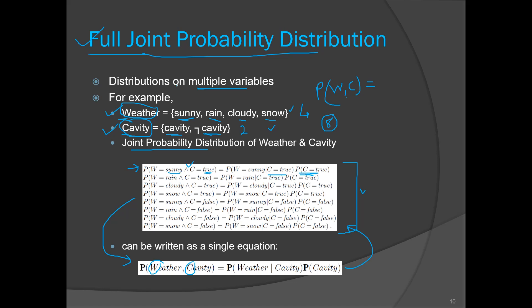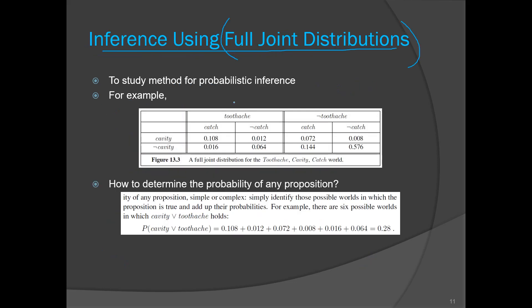Now we are studying the method of probabilistic inference — how to infer a new fact in the case of uncertainty. When you infer a new fact, that fact will have some probability because uncertainty is present. The given data itself has a probability, so the inferred fact will also have a derived probability. Here we consider an instance with three variables.